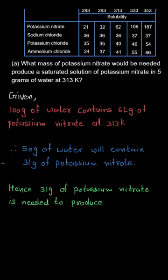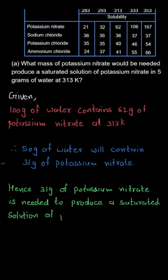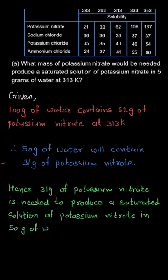We can conclude that 31 grams of potassium nitrate is needed to produce a saturated solution of potassium nitrate in 50 grams of water at 313 Kelvin.